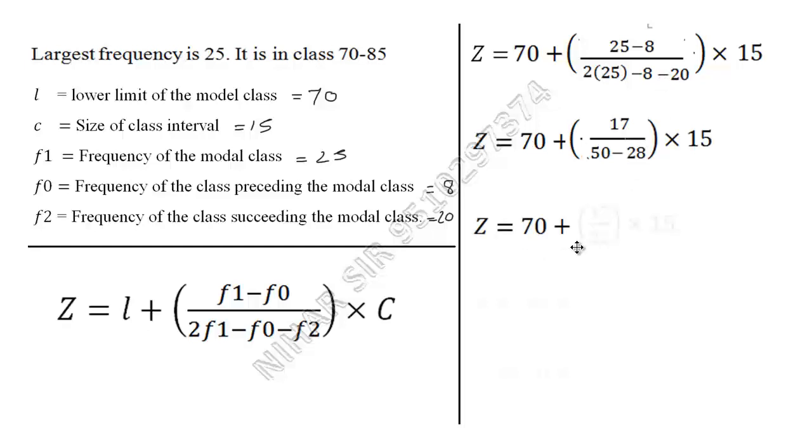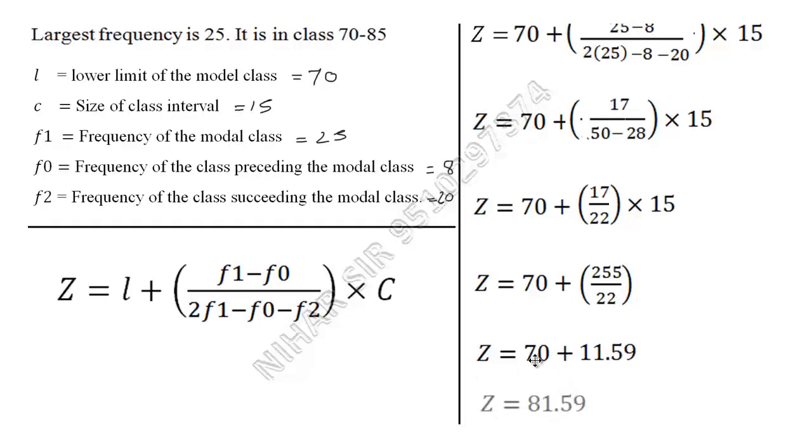This will be 255 upon 22. Why 255? Because 17 times 15. Now if I divide this, I will get 11.59. And then addition of these two